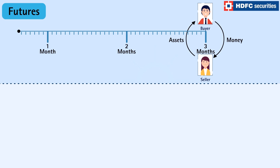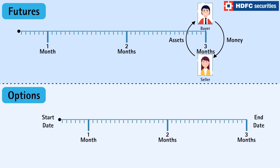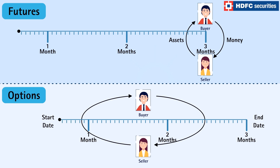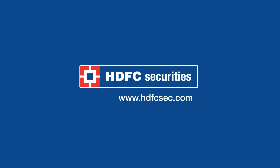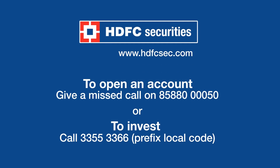An options contract requires the performance to be done at any time prior to the date of expiry. These are some fundamental differences that affect the level of risk involved, and therefore how you should use them.